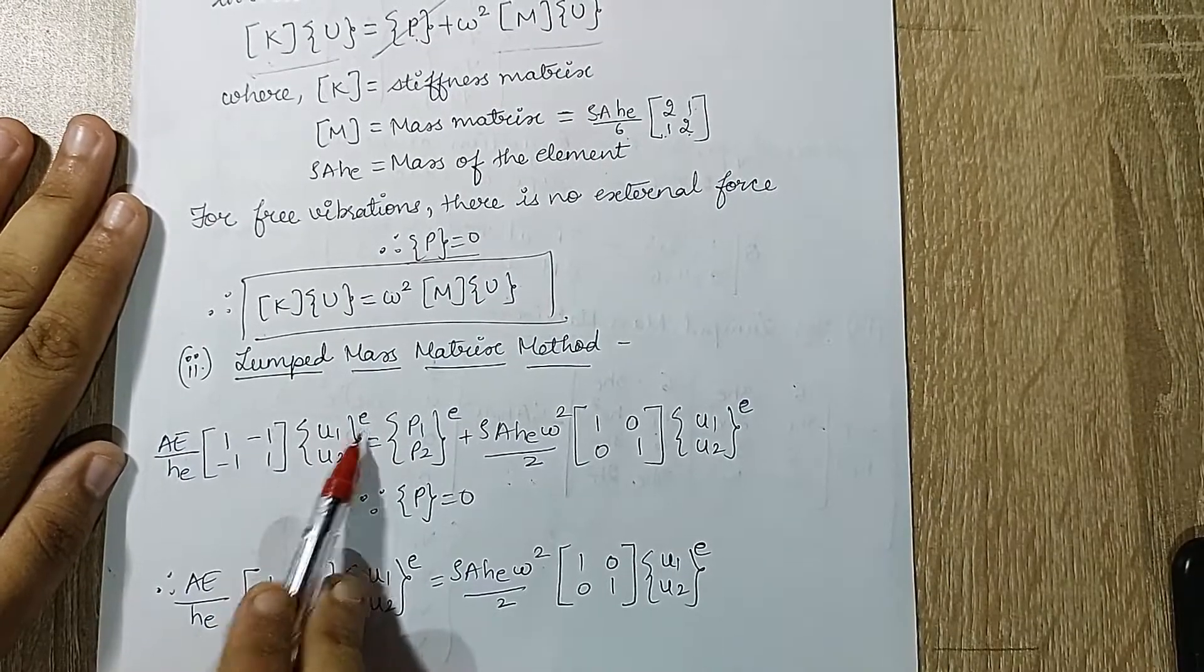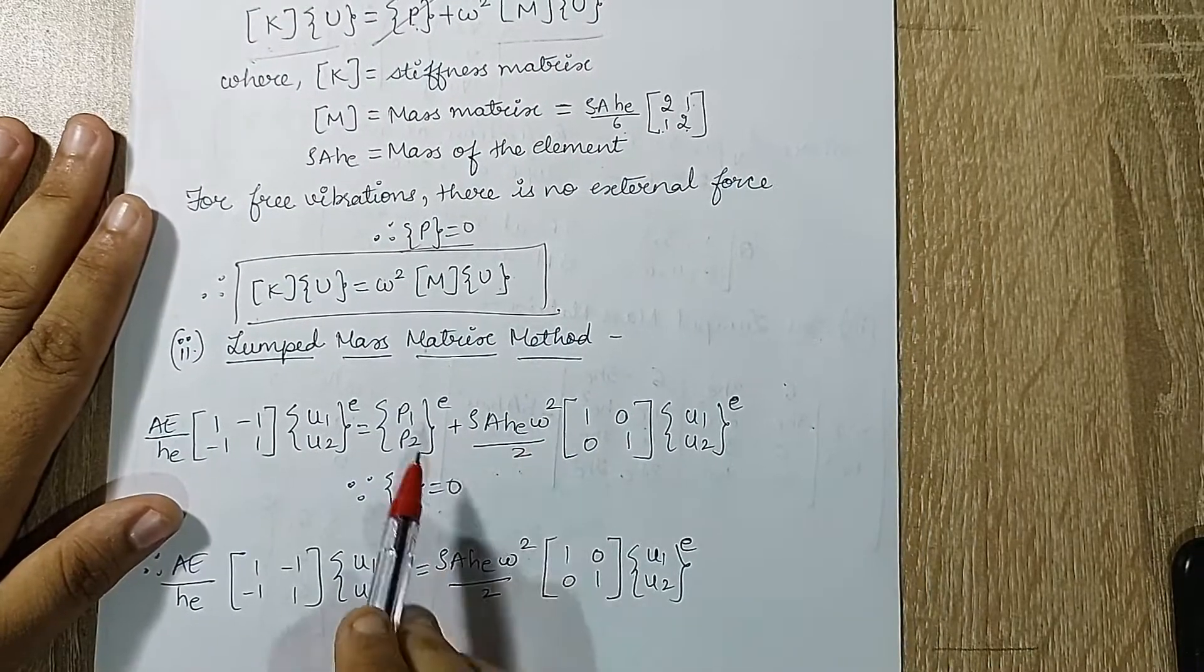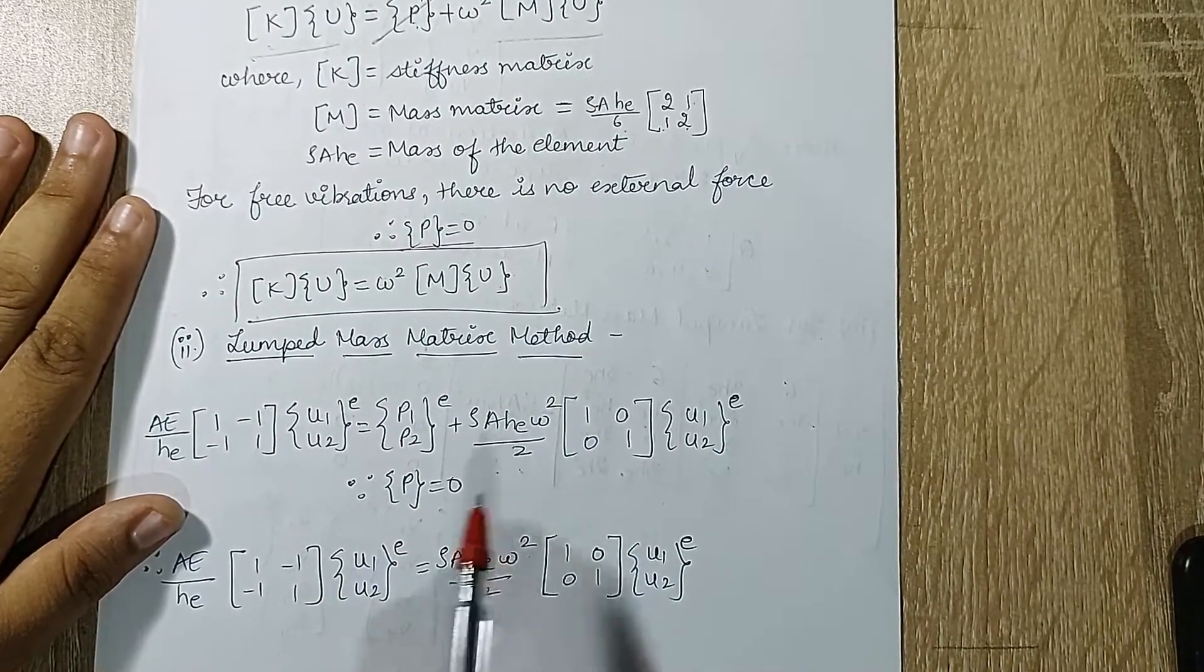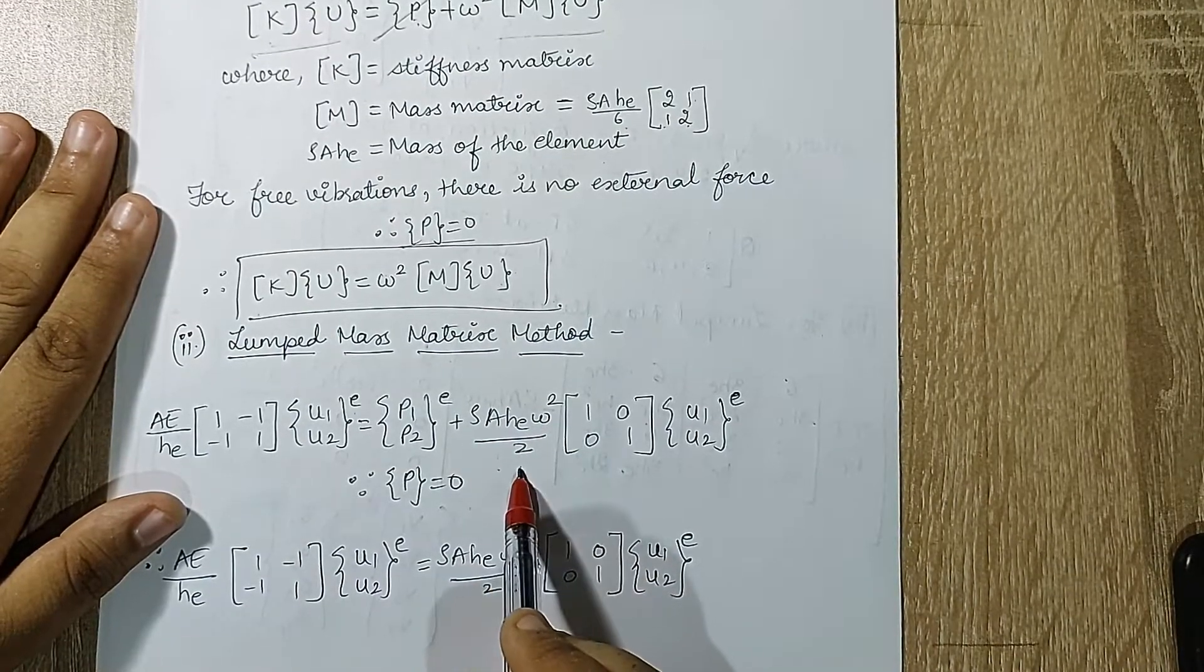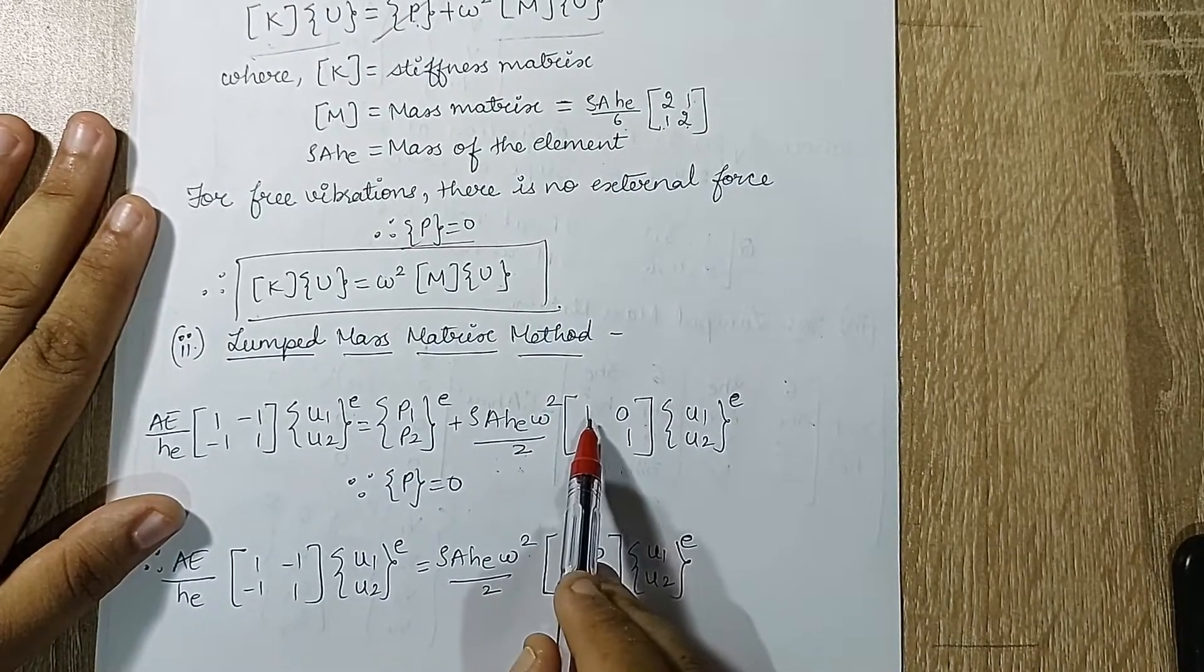This is again the same left hand side which we just saw. On the right hand side again {P1, P2} raised to E, which is obviously going to become zero over time. Then you have rho A HE omega square upon 2. In the previous method it was upon 6.